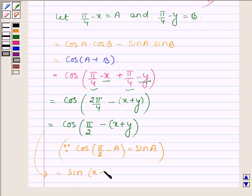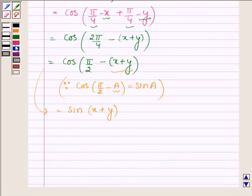cos(π/2 - A) is equal to sin(A). Therefore it can further be written as sin(x + y). Since here A is x + y.